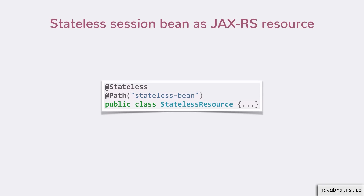Here is an example of a stateless session bean being defined as a JAXRS resource. I have a stateless resource annotated with @Stateless, but I also have the @Path annotation that we're already familiar with in JAXRS. This makes it a JAXRS resource which is also a stateless session bean — it works the same way as any EJB typically would, but it is also something that the JAXRS framework picks up for handling REST API requests.